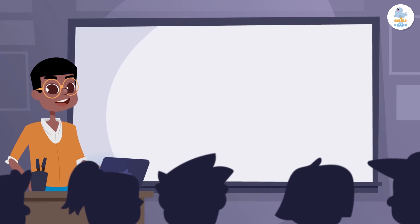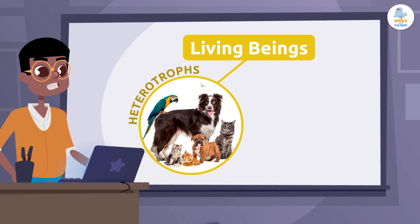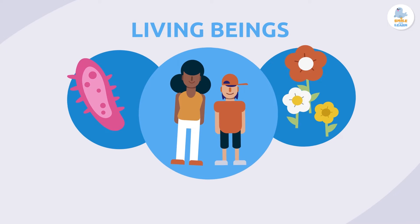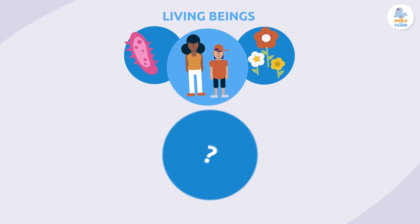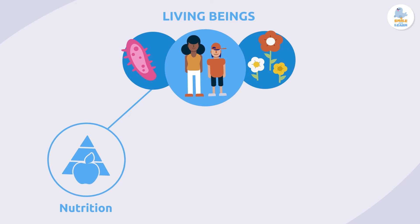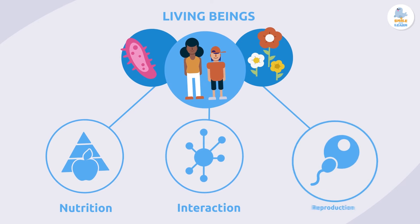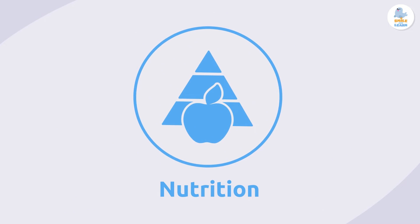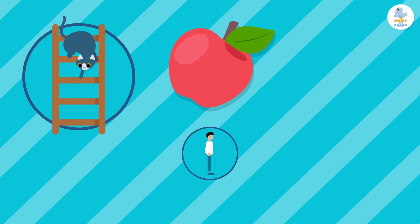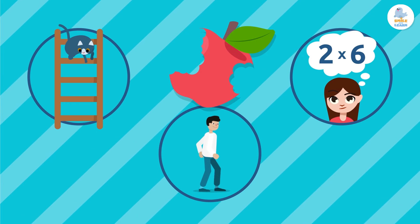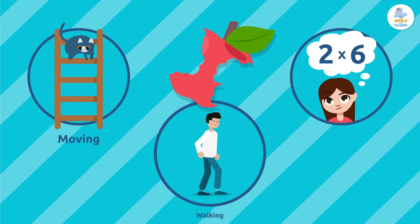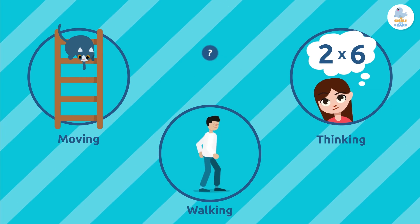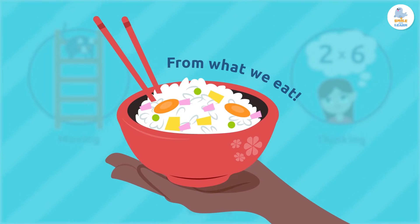Today we're going to explore the differences between heterotrophs and autotrophs. Living beings need to carry out three vital functions to survive: nutrition, interaction, and reproduction. Thanks to the function of nutrition, living beings get the energy they need to carry out everyday activities like moving, walking, or even thinking. But where do we get all this energy from? From food — in other words, from what we eat!